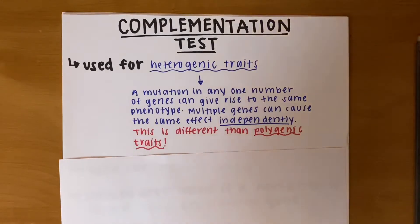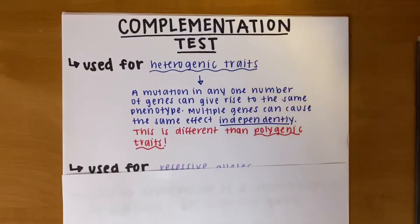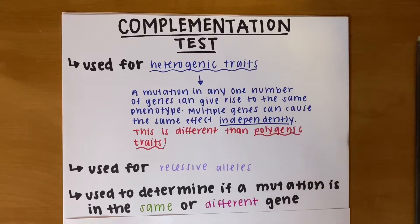Next, alleles causing a heterogenic trait may be dominant or recessive and autosomal or X-linked, but for the complementation test to work, we must know that we have all recessive alleles. This will make more sense when we go through an example later. Complementation tests are used to determine if a mutation is in the same or different genes.